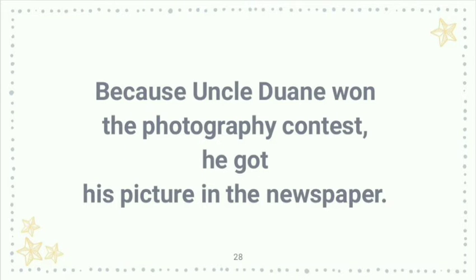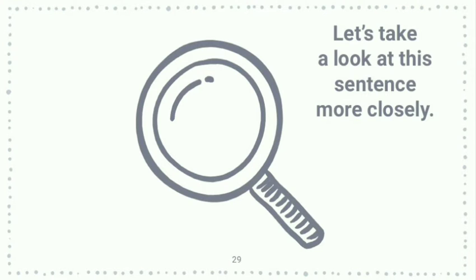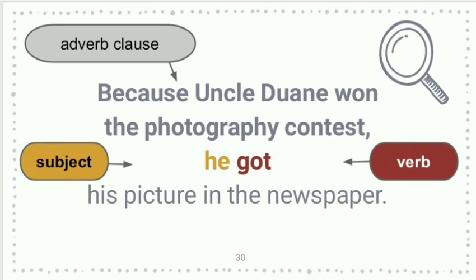Because Uncle Dwayne won the photography contest, he got his picture in the newspaper. Let's take a look at this second sentence more closely. The subject is he. The verb is got. And the adverb clause, 'because Uncle Dwayne won the photography contest,' is going to qualify 'got,' because this is explaining that he got his picture in the newspaper because of this thing that happened.